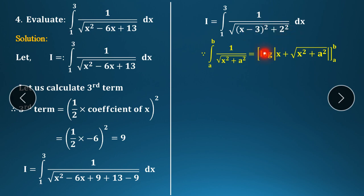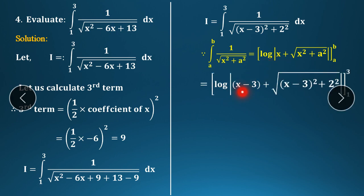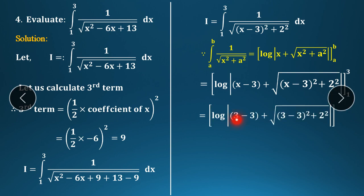So: integration from 1 to 3 of 1/√(x² − 6x + 9 + 13 − 9) dx = integration of 1/√((x−3)² + 4) dx. Here 4 = 2². The denominator is in the form √(x² + a²), so we apply the formula: integration of 1/√(x² + a²) dx = log|x + √(x² + a²)|, with limits from a to b.